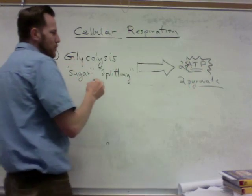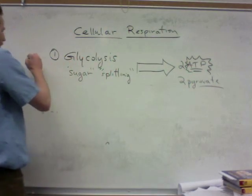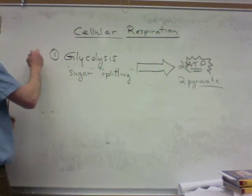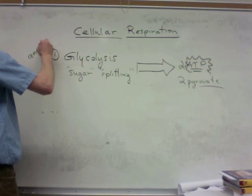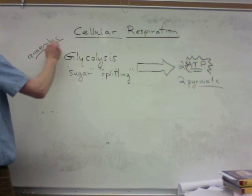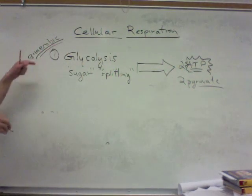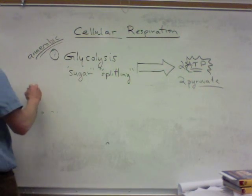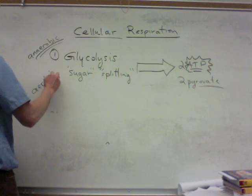Glycolysis happens anaerobically — anaerobic just means without oxygen. Glycolysis happens whether or not oxygen is present, but the next stages happen only if there is oxygen present, so they are called aerobic stages.